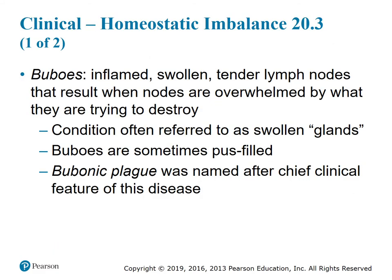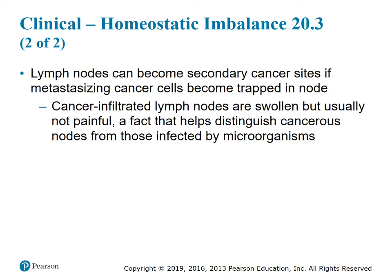Clinical homeostatic imbalance 20.3: Buboes are inflamed, swollen, tender lymph nodes that result when nodes are overwhelmed by what they are trying to destroy. The condition is often referred to as swollen glands. Buboes are sometimes pus-filled. The bubonic plague was named after this chief clinical feature. The lymph nodes can become secondary cancer sites if metastasizing cancer cells become trapped in the node. Cancer-infiltrated lymph nodes are swollen but usually not painful — a fact that helps distinguish cancerous nodes from those infected by microorganisms.